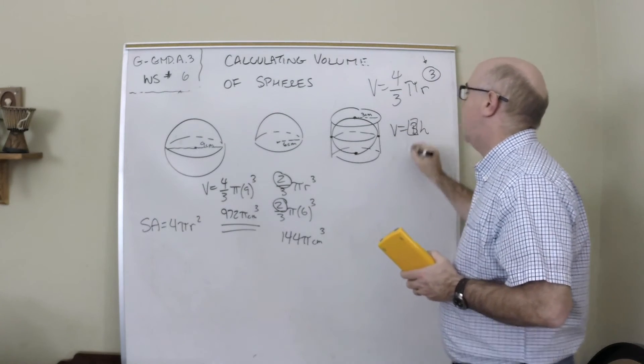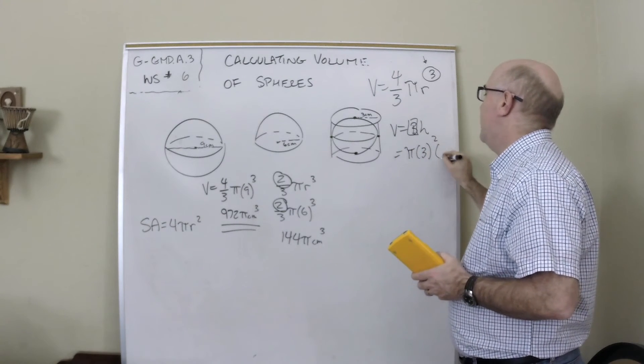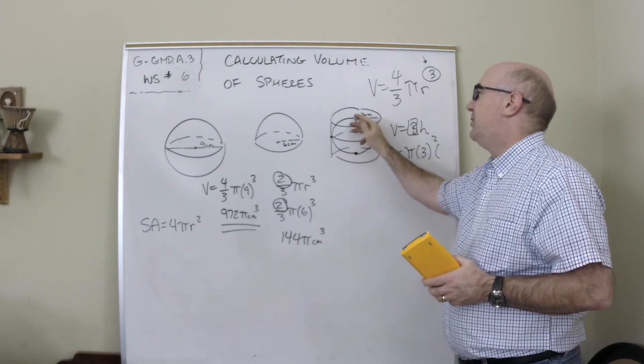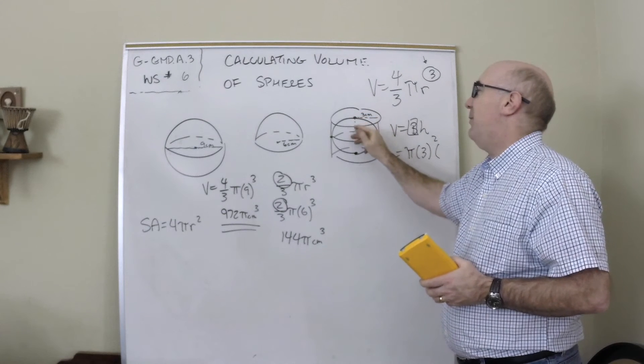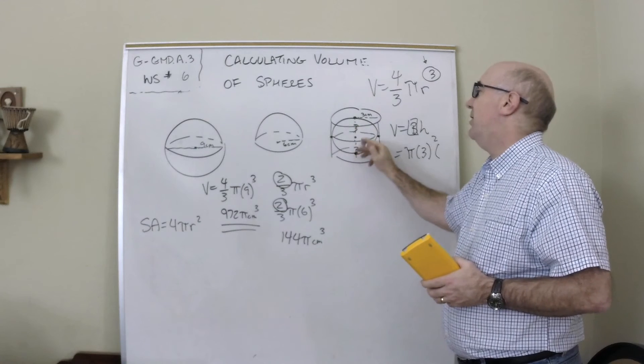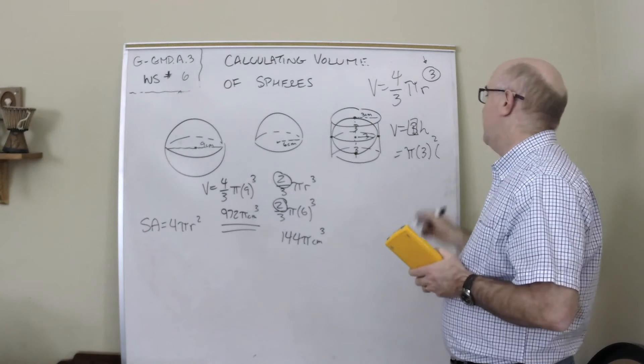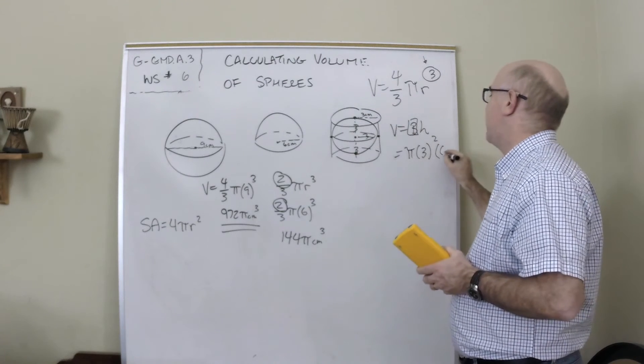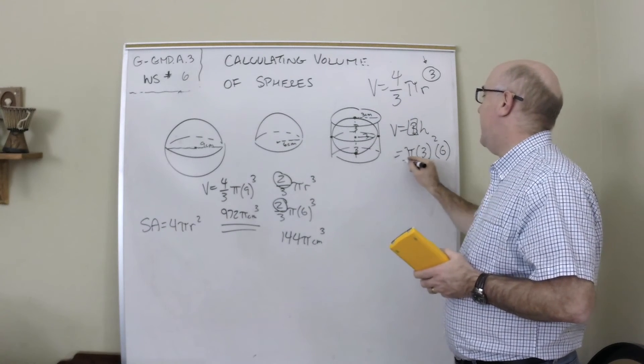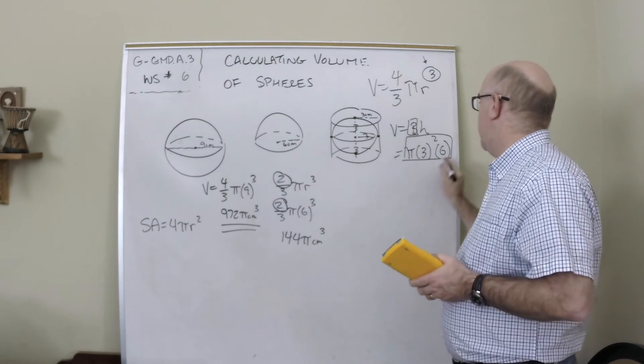Now h might feel a little tricky, but that would be the same three here as here because the ball fits the can perfectly. So in this case, the height is six, so that would be the volume of the can, which comes out to nine times six—54π.